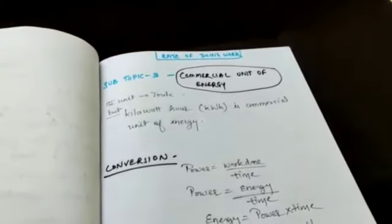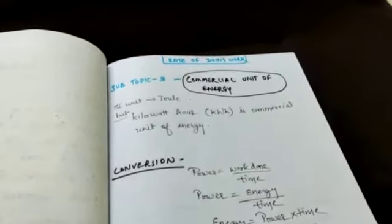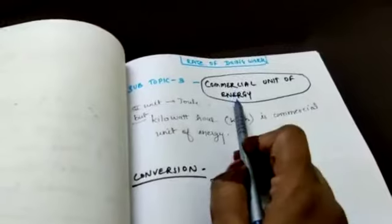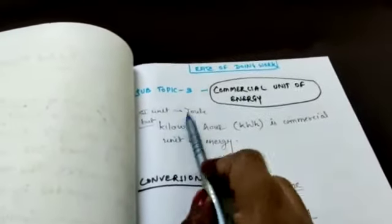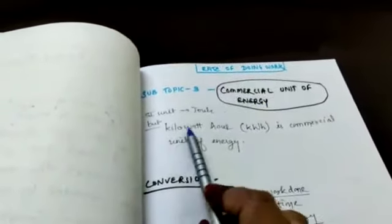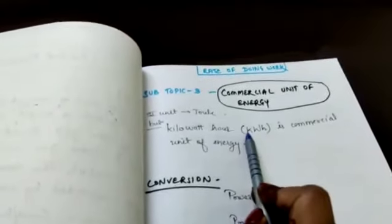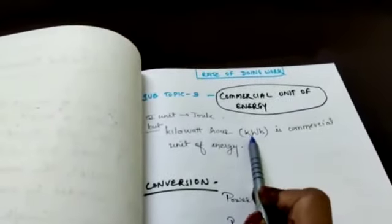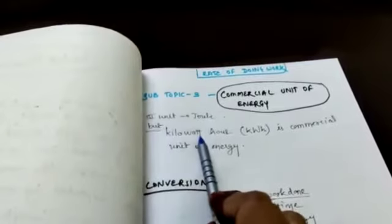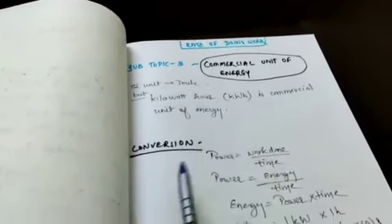So this is subtopic number 2. And then now we have subtopic number 3, commercial unit of energy. Commercial unit means energy on a large scale. SI unit is Joule. But on commercial scale, kilowatt hour. K is small, H is small, W is capital. So it is kilowatt hour. It is commercial unit of energy.